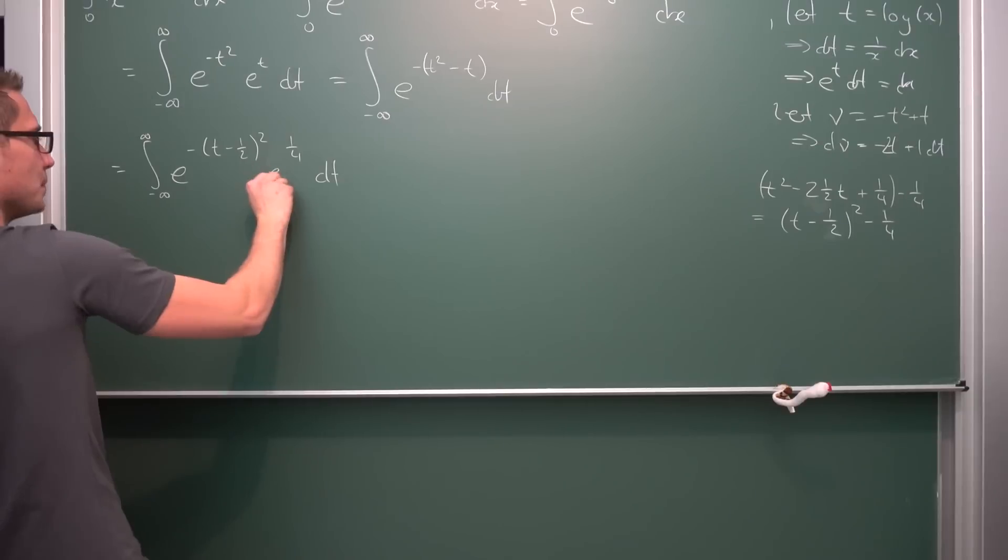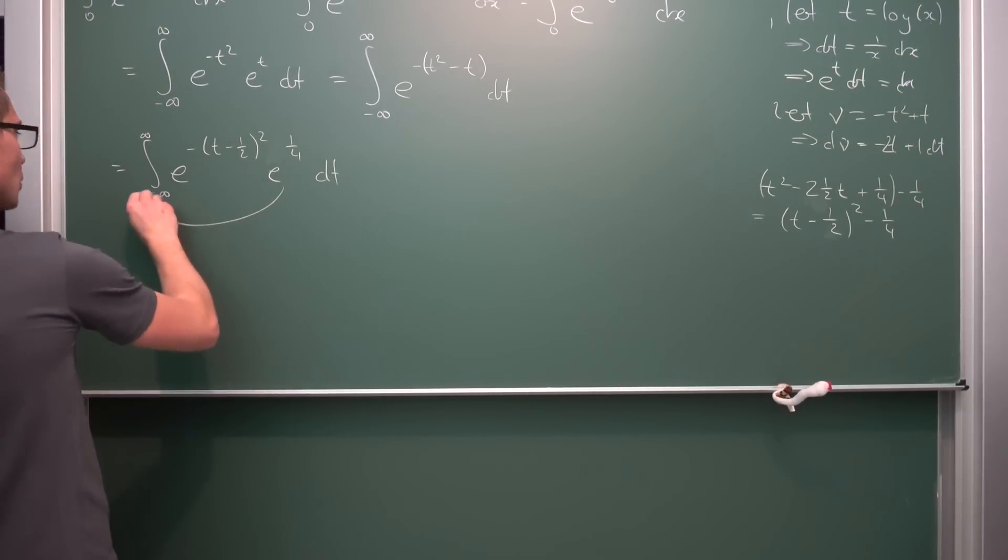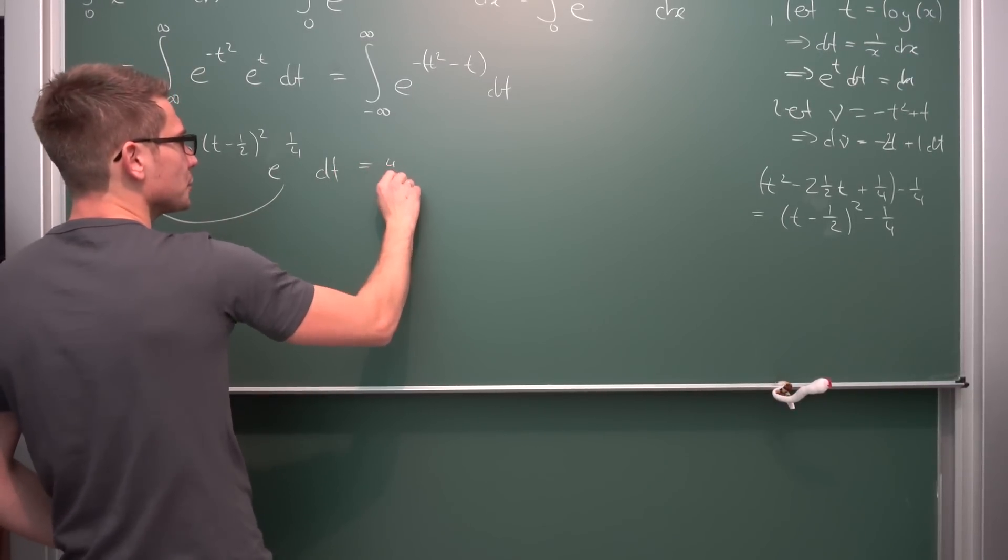At first, using the function equation of the exponential function again, we can break the addition of exponents up into the multiplication of exponential functions, taking the e to the one quarter to the front. Giving us overall the fourth root of e, you could say.